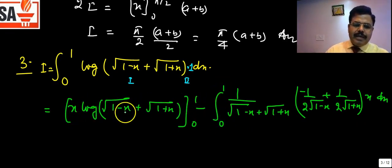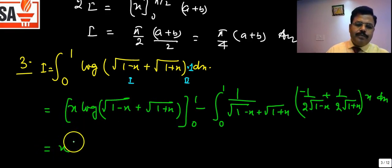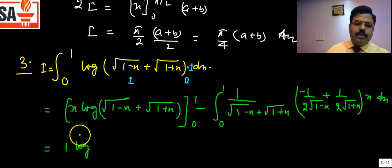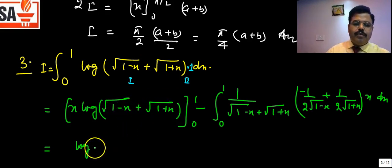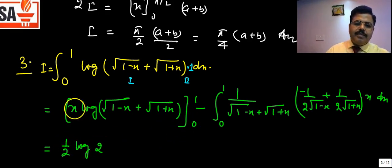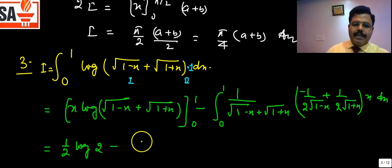Substituting x=1 in the boundary term: we get 1·log(0 + √2) = log√2 = ½·log2. Substituting x=0 gives 0·(something) = 0. So the boundary term contributes ½·log2.